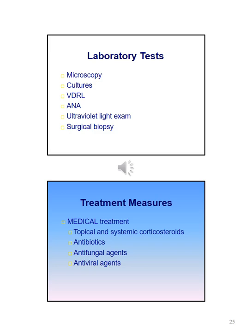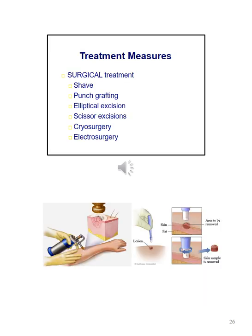Lab tests that you might consider ordering on a patient with a skin problem include microscopy, cultures, VDRL and ANA, an ultraviolet light exam, and sometimes a surgical biopsy. For medical treatment you may prescribe a topical or systemic corticosteroid, an antibiotic, an antifungal agent, or an antiviral agent. Surgical treatments may include shaving the skin, punch grafting, elliptical excision, scissor excisions, cryosurgery, or electrosurgery.